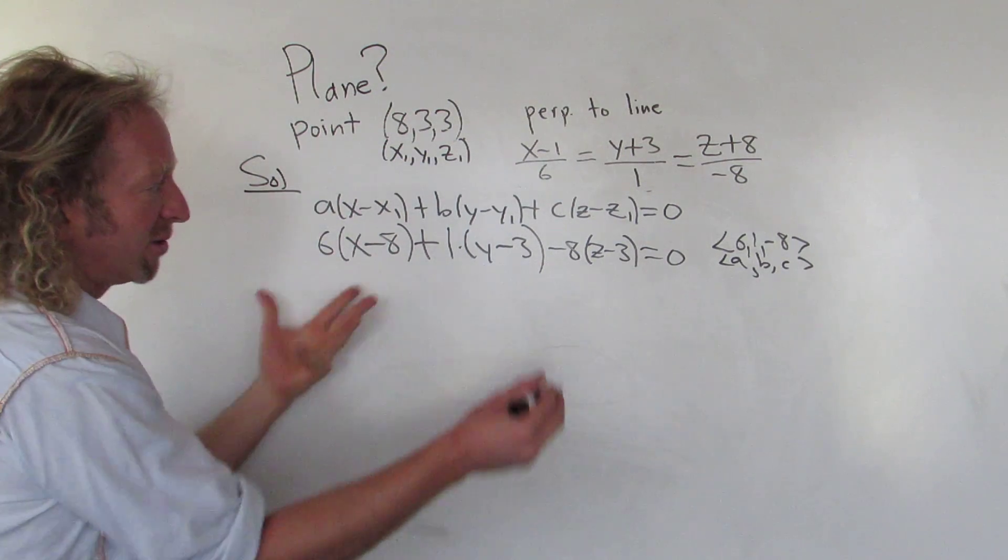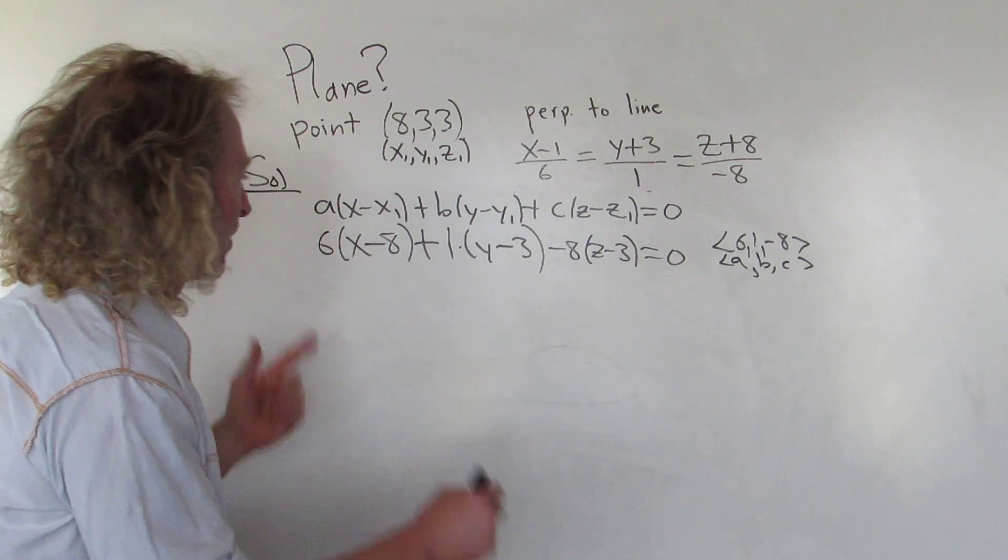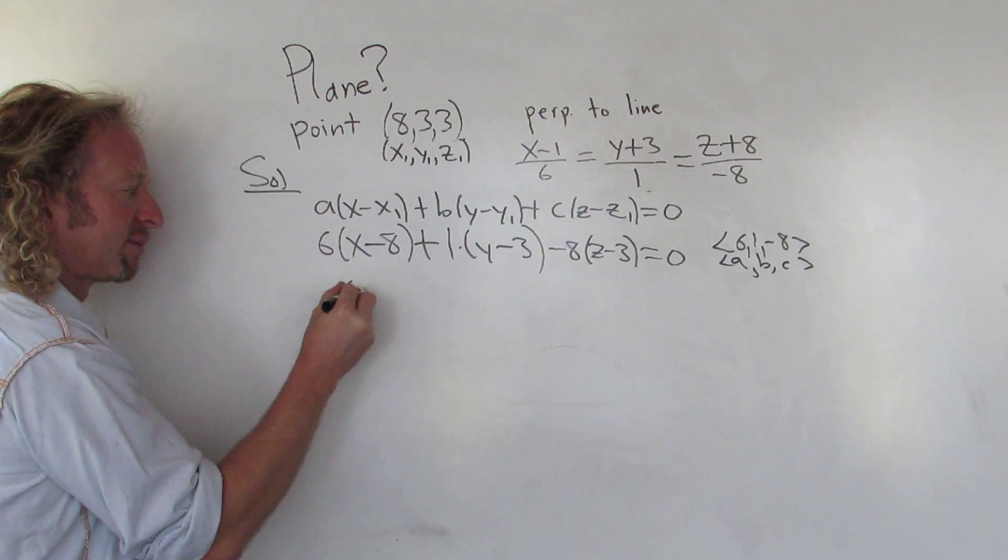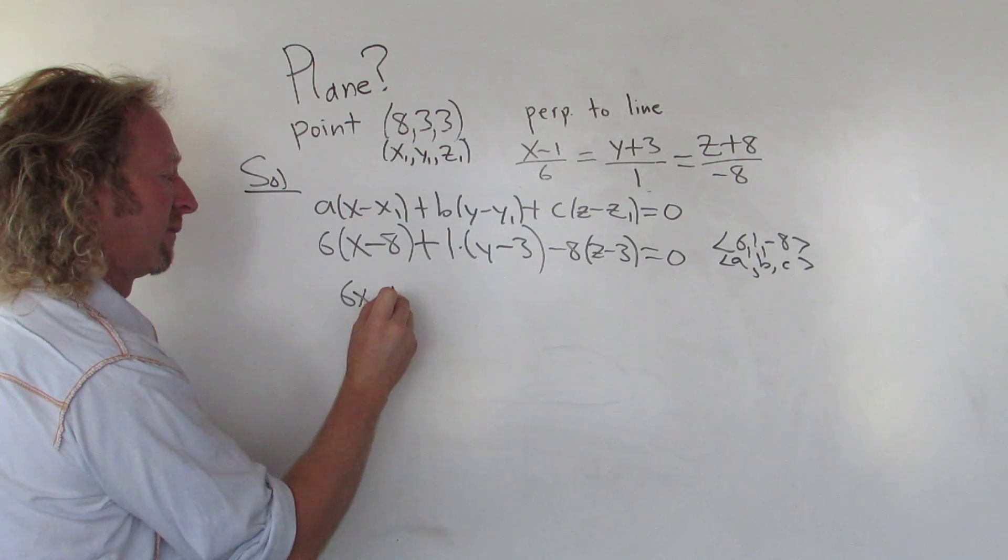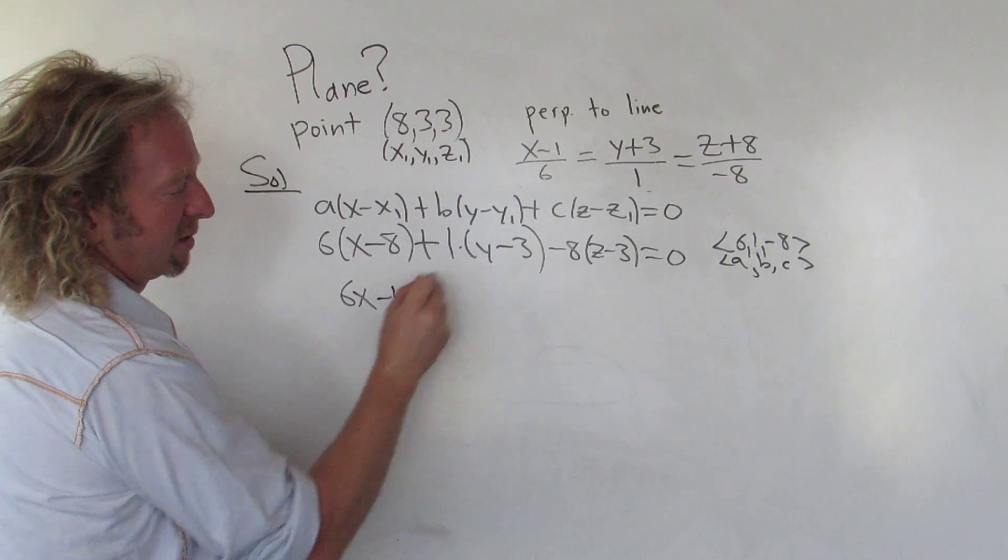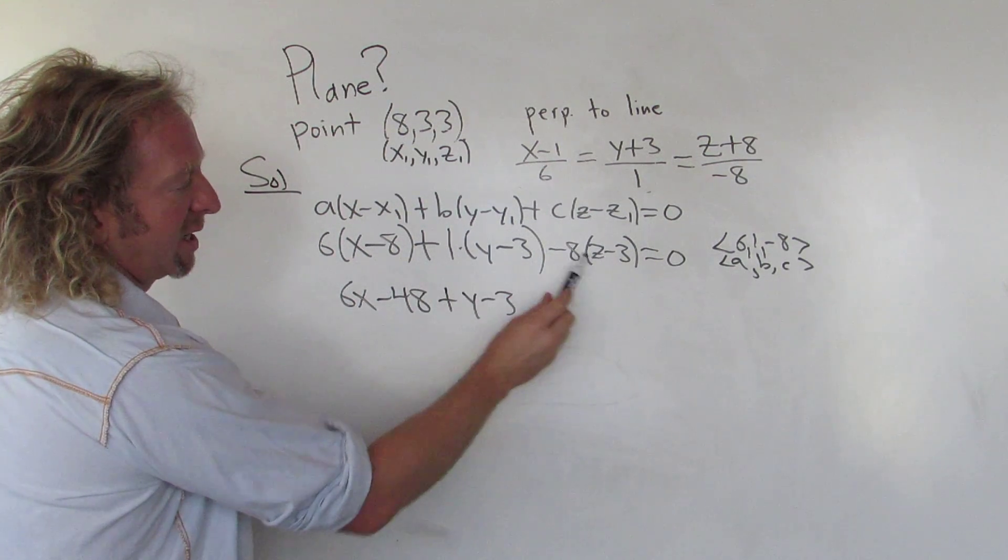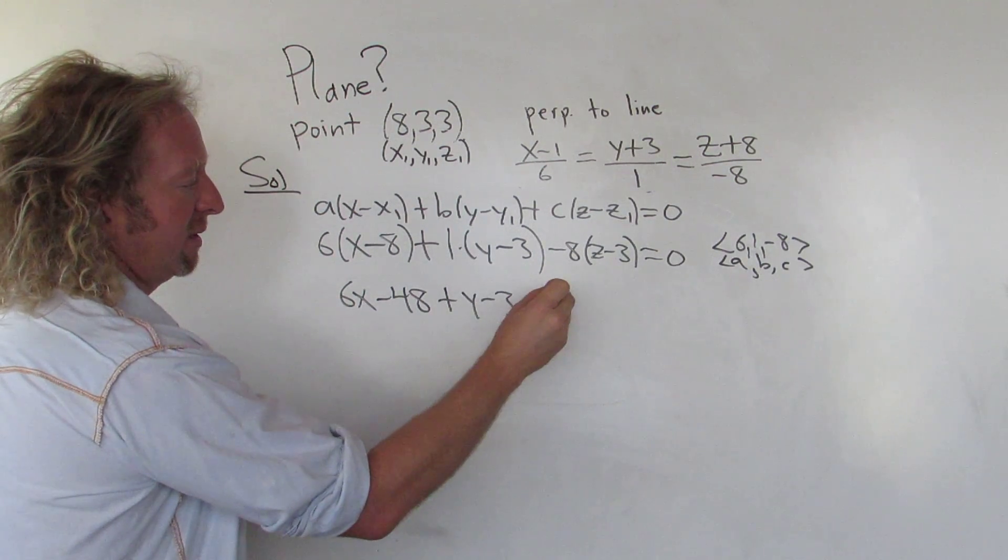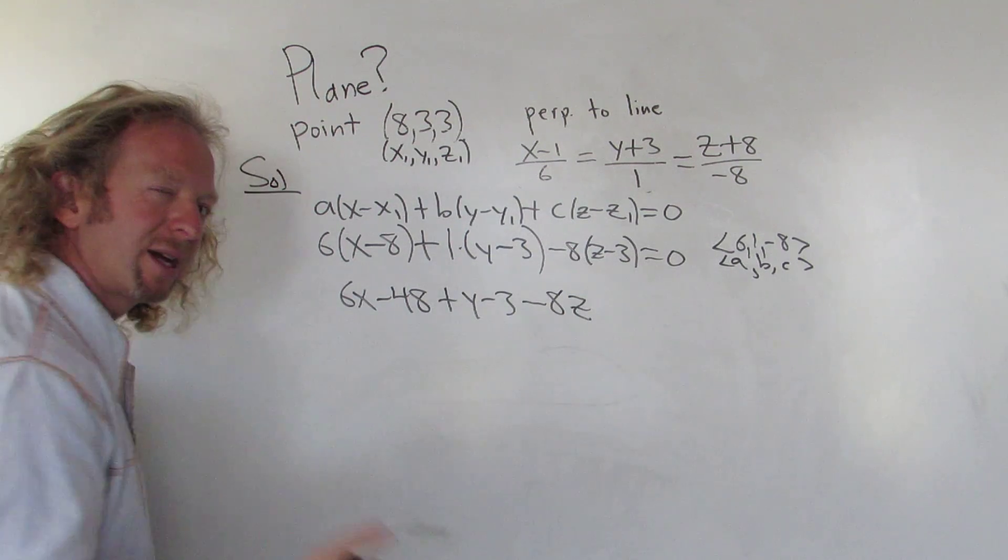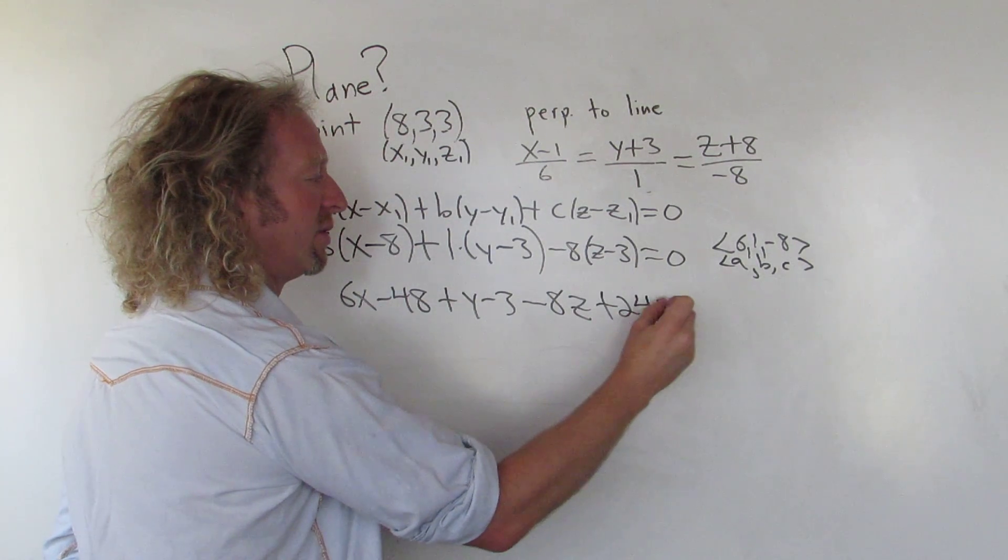Okay, that's it. I mean, you could distribute and collect like terms. I guess I will. 6x. 6 times negative 8 is negative 48. This is just going to be y minus 3. Negative 8 times z is negative 8z. Negative 8 times negative 3 is positive 24. And that's equal to 0.